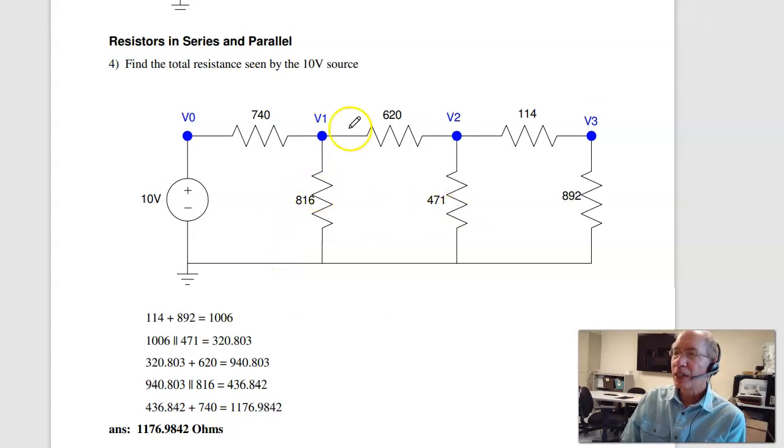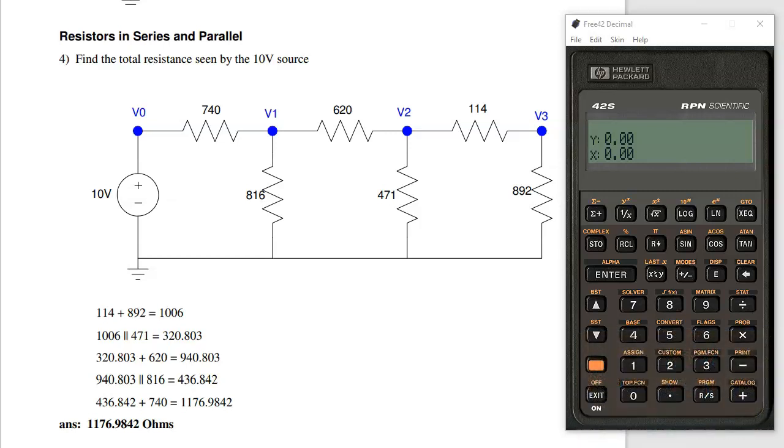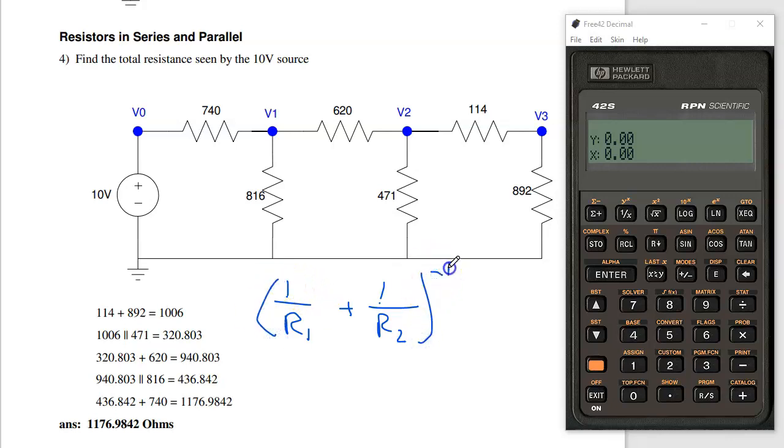Problem four is solve for the resistance. This is where the HP calculators are really nice. Let's go to that picture. So resistors in series add. In parallel, they add as 1 over R1 plus 1 over R2. So this is the equation for resistors in parallel. These two are in series. The current through the first resistor has to go through the second. So that will be 114.